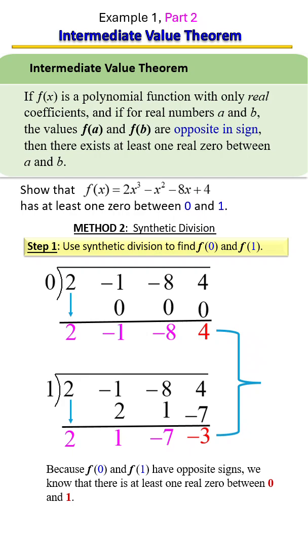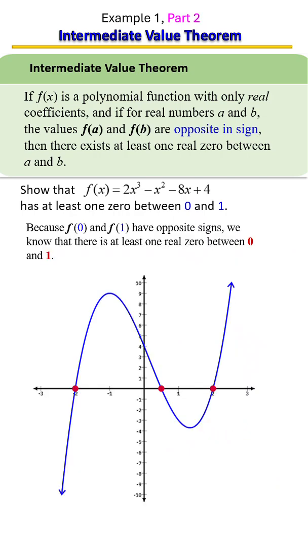And here's what the graph looks like. Notice we have three zeros and one of them is between zero and one.